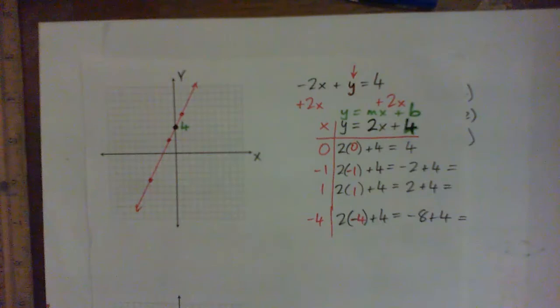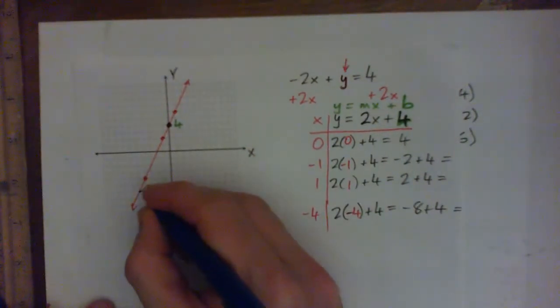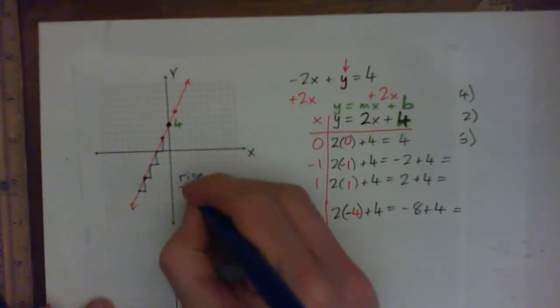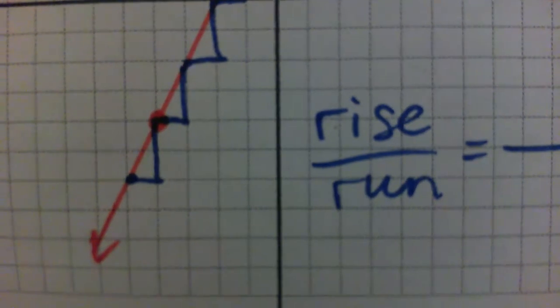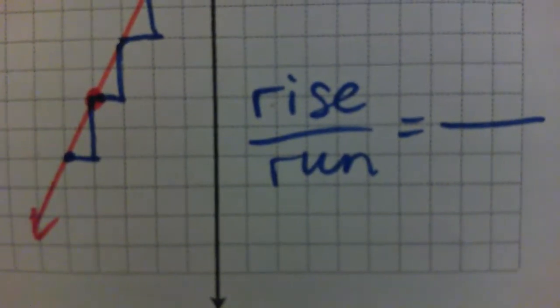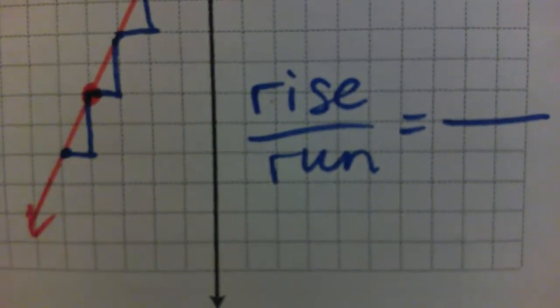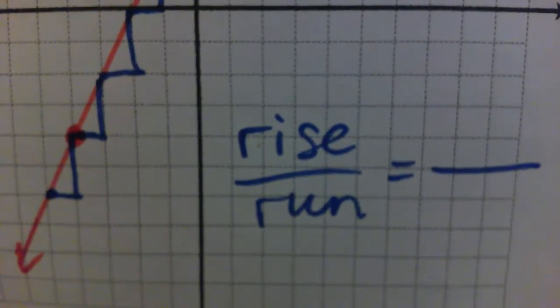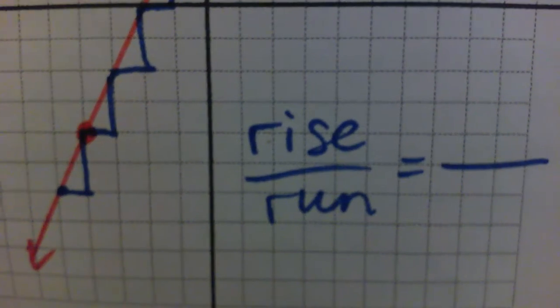So now the slope is the next thing. If you have the graph there, I want you all to pick points and go from one to the other by going over and then up. Over, up. Over, up. Over, up. Or run, rise, run, rise, run, rise. And we'll see that the rise over the run is what? When I'm going from one point to the other, I want you all to see how far are you going across and how far are you going up to get to the next point. Just write down the rise over the run. The distance you go across is the run and the distance you go up is the rise.